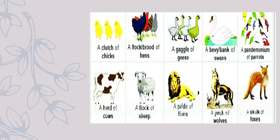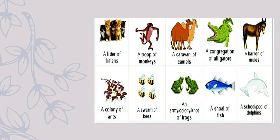A clutch of chicks, a flock or brood of hens, a gaggle of geese, a bevy or bank of swans, a pandemonium of parrots, a herd of cows, a flock of sheep, a pride of lions, a pack of wolves — we've also done a pack of cards — and a skulk of foxes. We also have a herd of monkeys. Please keep on learning these collective nouns and play a quiz with each other!